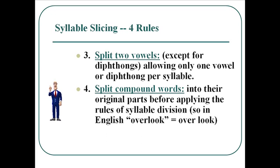To summarize: rule one, if you've got a consonant or consonant cluster, it goes with the vowel that follows it. Rule two, you've got a couple consonants in a row, you split them, unless they're a cluster. Rule three, you've got a couple vowels in a row, you split them, unless they're a diphthong. And the final rule is you split between compound words. That's it. No problem.